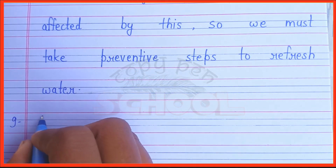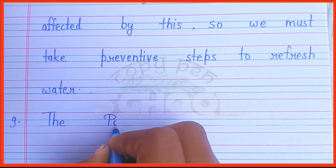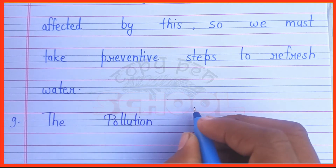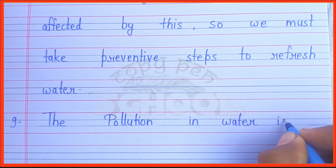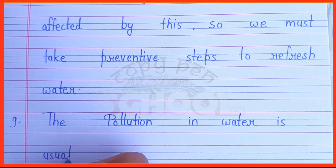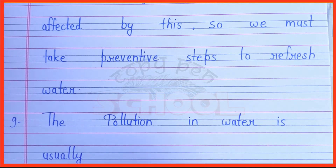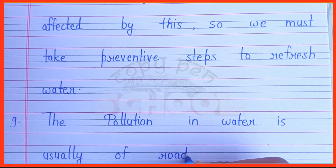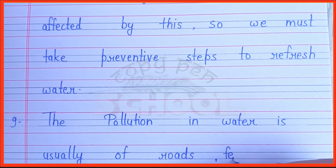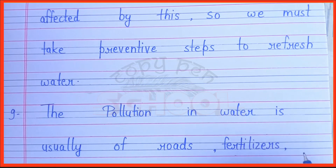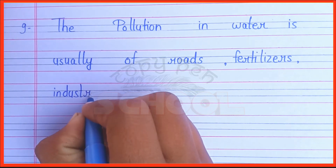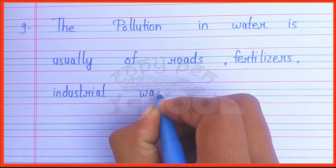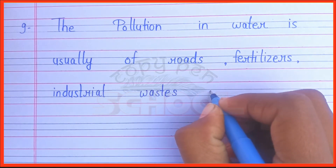Number 9. The pollution in water is usually from roads, fertilizers, industrial waste, etc.